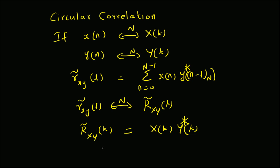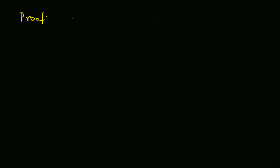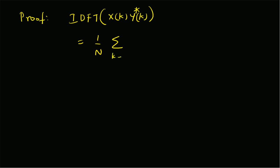Now let us verify the theorem. To start with, we compute the IDFT, that is the inverse discrete Fourier transform, of X of k and Y of k conjugate, because that is the Fourier transform of the circular correlation. We start with the IDFT for this proof, which is actually easier. By definition it should be equal to 1 by N, summation k equal to 0 to N minus 1, X of k times Y of k conjugate, times e to the power j 2 pi l k by capital N. That is the definition of inverse DFT.